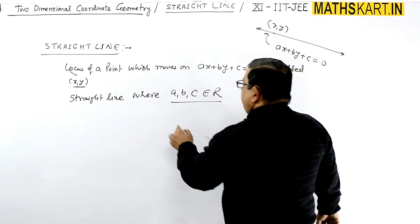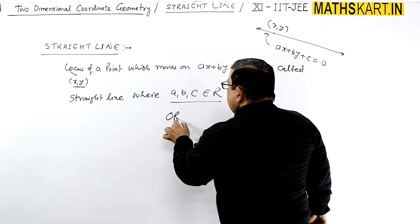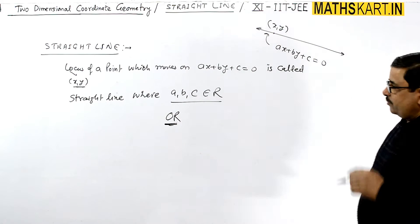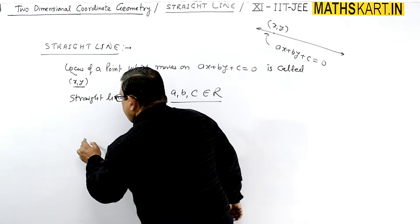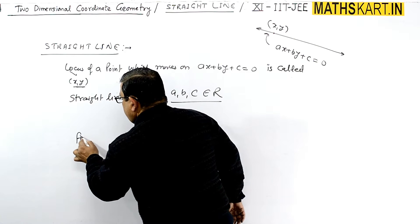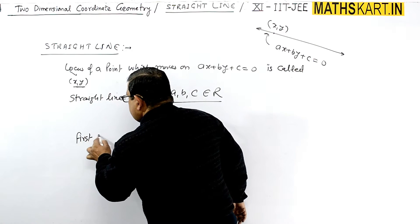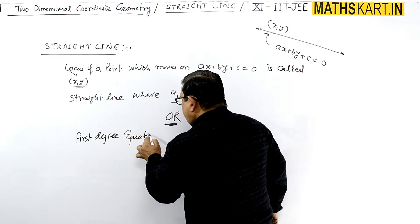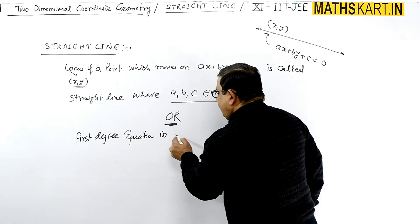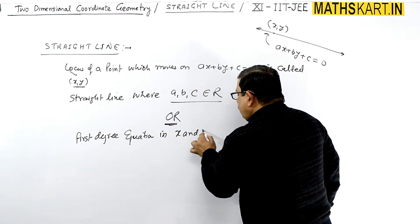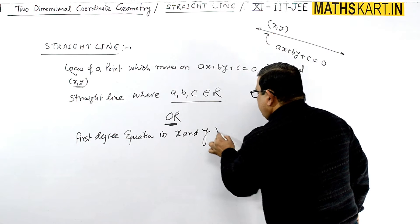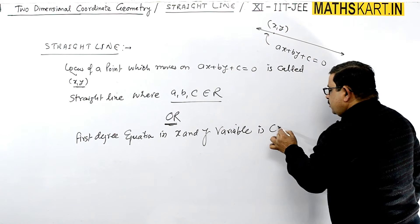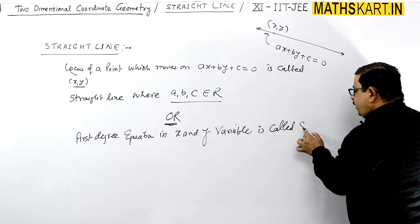A second definition is also given: a first degree equation in x and y variables is called a straight line.